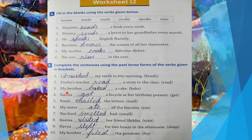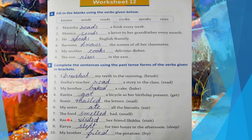Third: My brother baked a cake — fill 'baked'. Fourth: Kavita got a bicycle as her birthday present — fill 'got'. Fifth: Ronit mailed the letters — fill 'mailed'. Sixth: My sister ate all the biscuits — fill 'ate'. Seventh: The food smelled bad — fill 'smelled'. Eighth: Rima visited her friend Shikha — fill 'visited'. Ninth: Kavya slept for two hours in the afternoon — fill 'slept'.